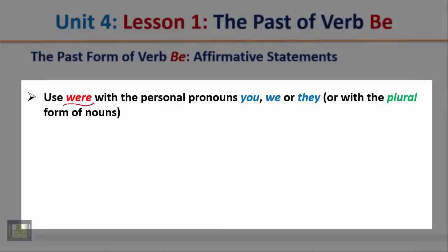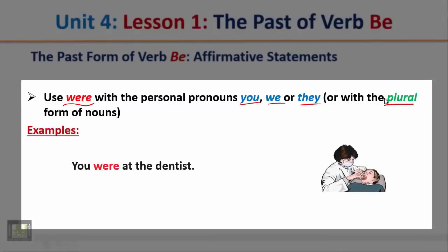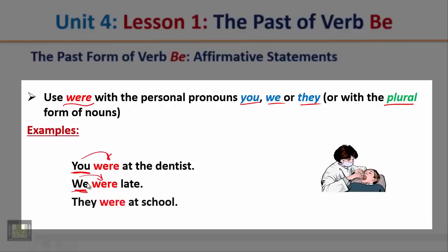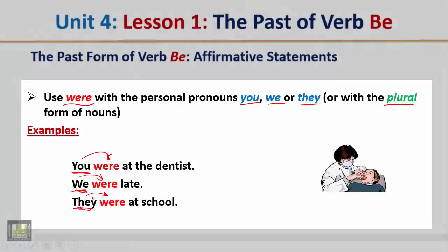Use 'were' with the personal pronouns you, we, they, or with the plural form of nouns. Examples: 'You were at the dentist.' Notice that after the subject pronoun you, we use 'were.' 'We were late.' After the subject pronoun they, we also use 'were.'